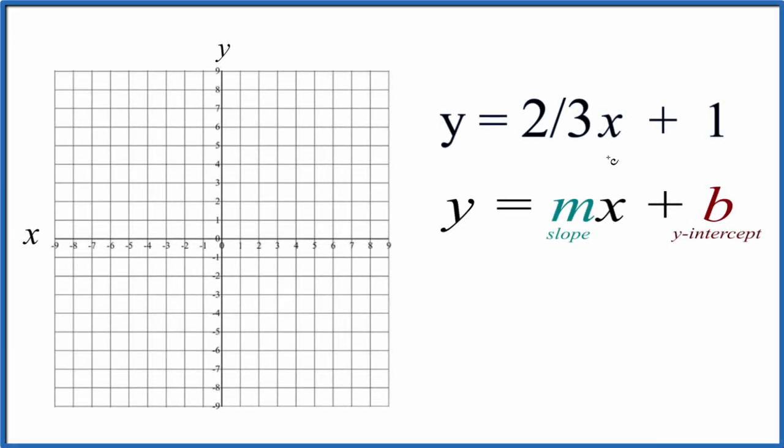All right, let's graph the linear equation y equals two-thirds x plus one. And we're going to use slope-intercept formula to do this.